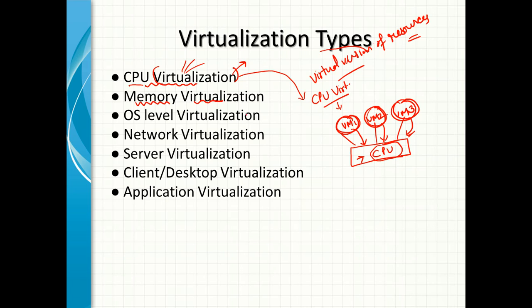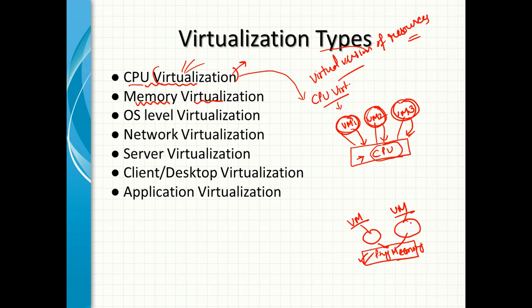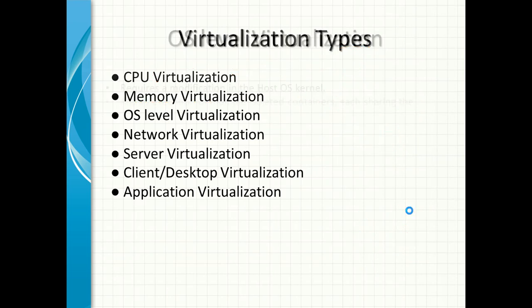The concept of memory virtualization remains similar. There is one physical memory associated with a particular host machine. Depending upon the virtual machines located on that machine, they will share some part of that physical memory. The segmentation of a single physical memory — so that each virtual machine can have access to it — is what we call memory virtualization.